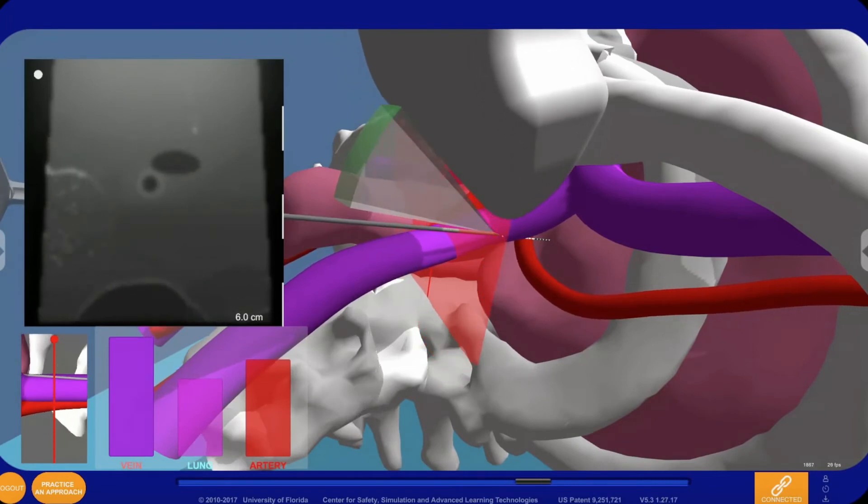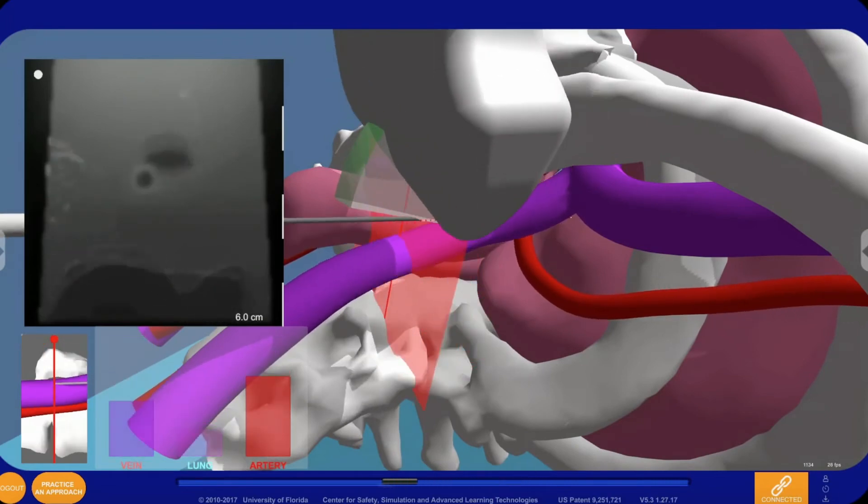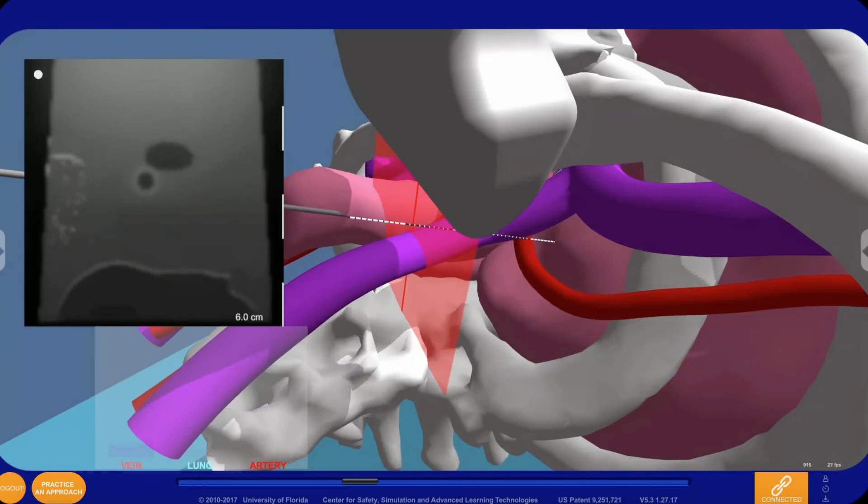This cognitive aid is a proximity monitor. It is a bar graph of how close the needle tip is to the vein, artery, and lung. The closer the needle gets to the structures, the higher the bars rise.